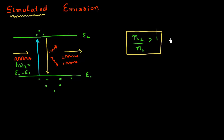So in this video, I want to discuss how this is possible — how can we achieve this realistically in a semiconductor? How can we have more electrons in the higher energy state compared to the lower energy state?